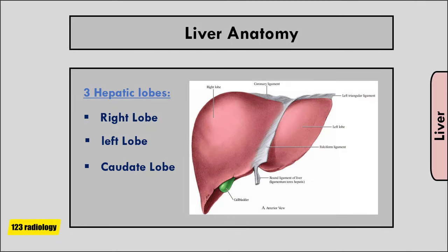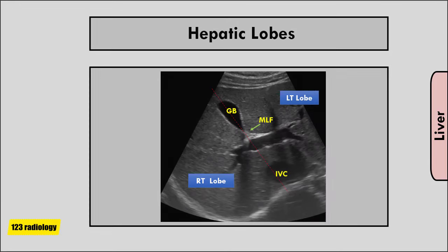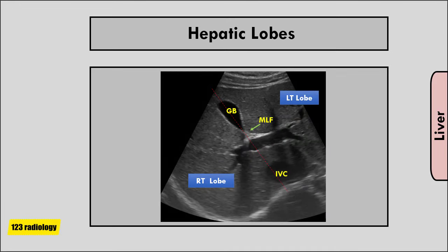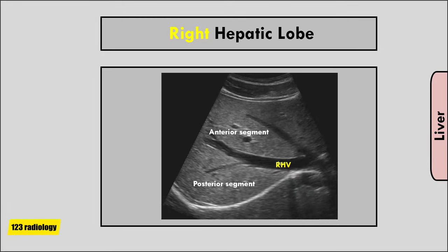The liver lies in the right upper quadrant of the abdomen. Functionally, it can be divided into three lobes: the right lobe, the left lobe, and the caudate lobe. The right lobe of the liver is separated from the left lobe by the main lobar fissure, which passes through the gallbladder fossa to the inferior vena cava.